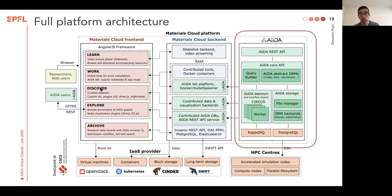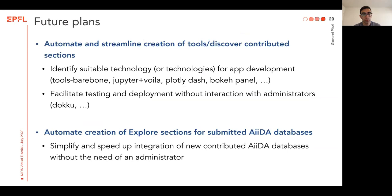A REST API allows access to the data. The core API — which you've been using for the past few days — allows making queries and managing codes, data calculations, and workflows. These run with workers in Circus, in the AIDA daemon, where the storage is both on files and databases. And AIDA can access HPC centers and run simulations for you.